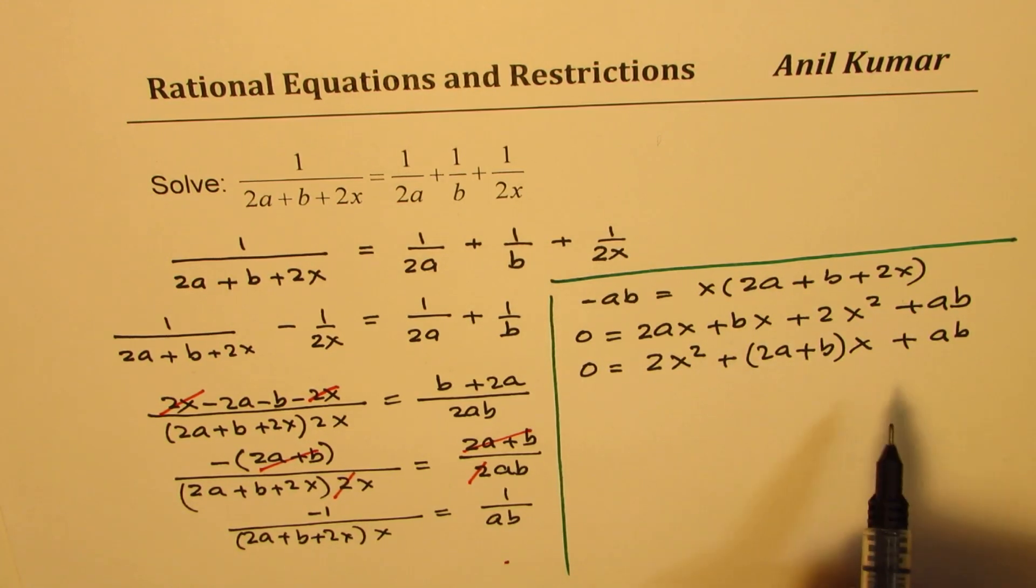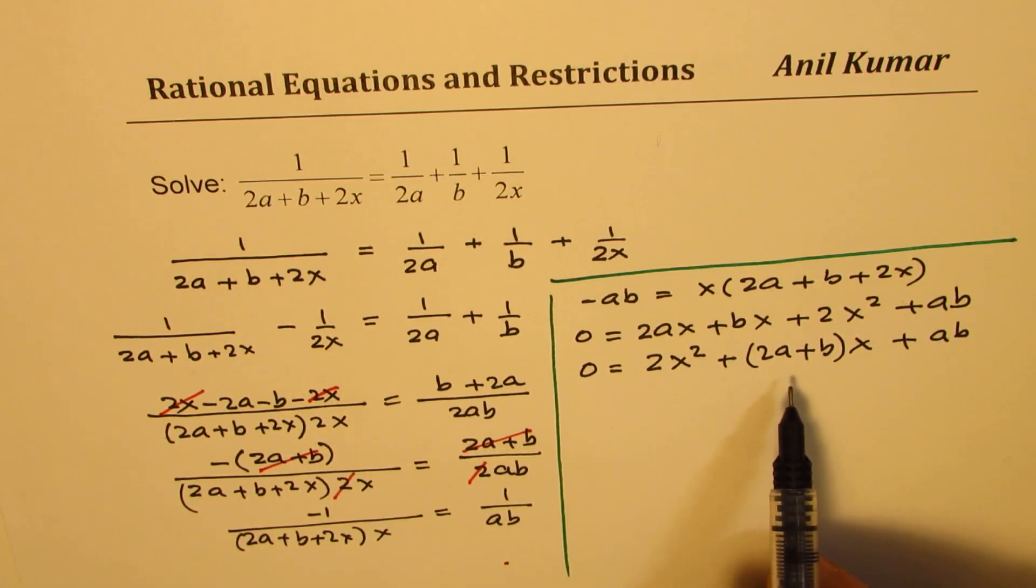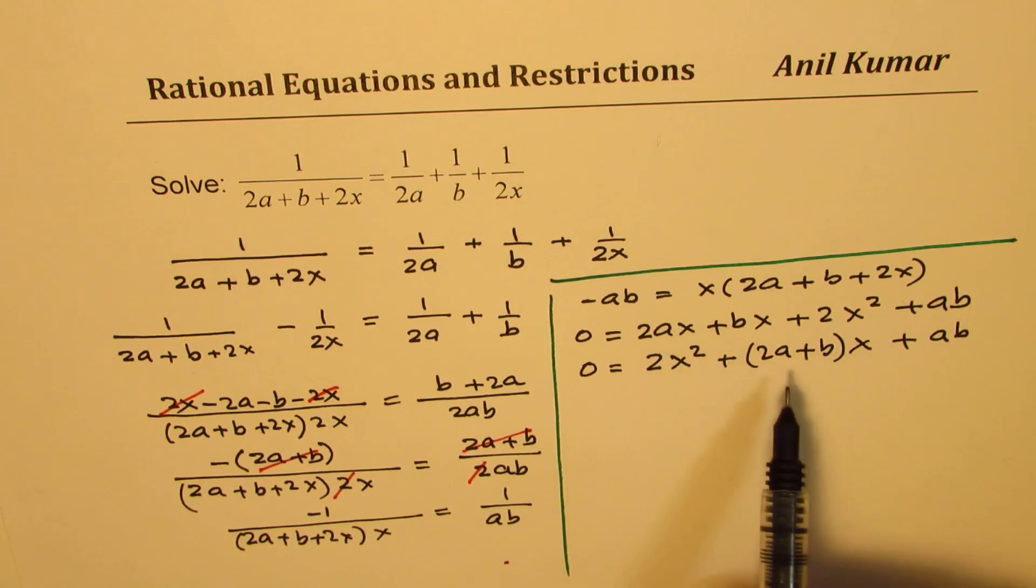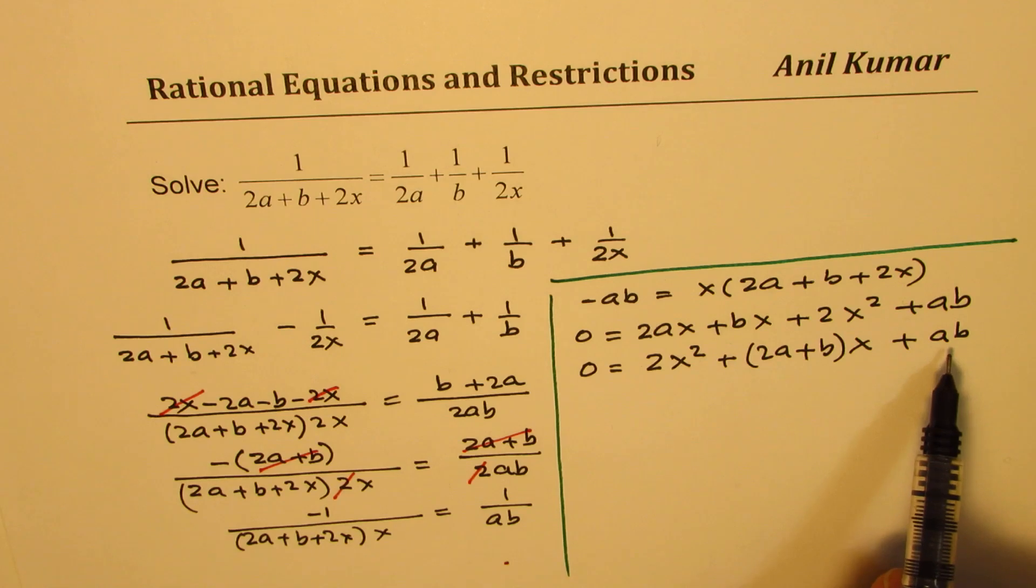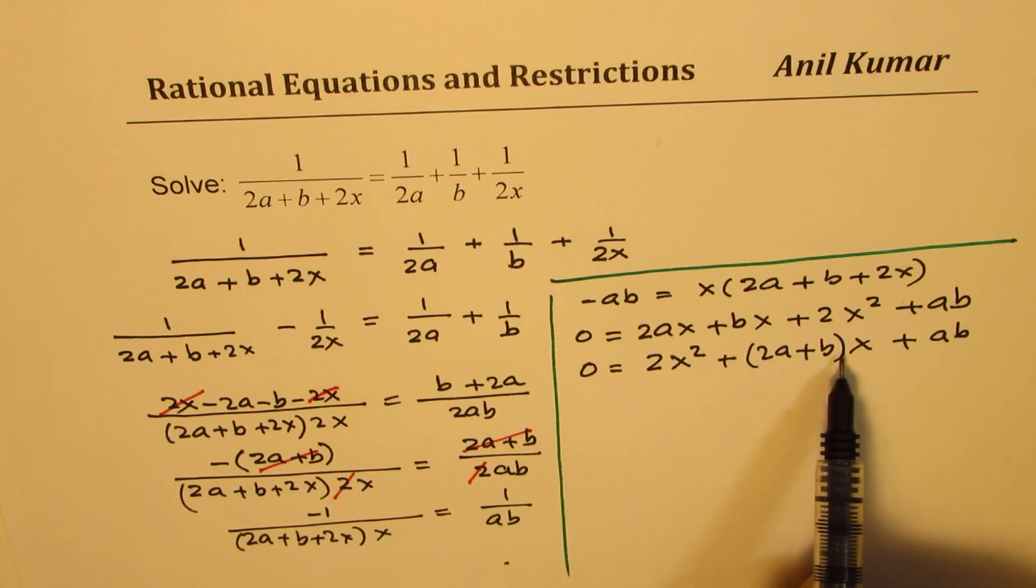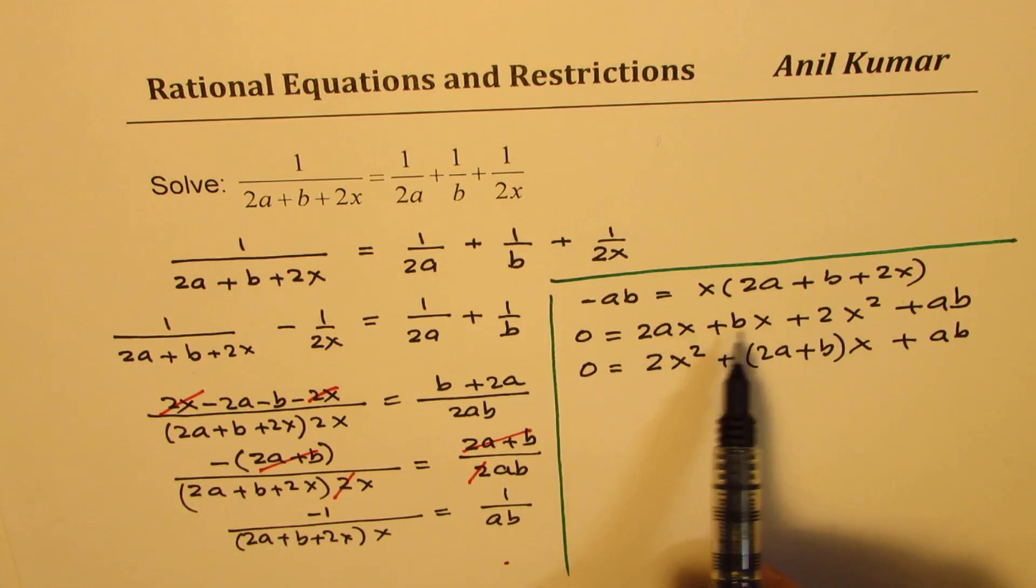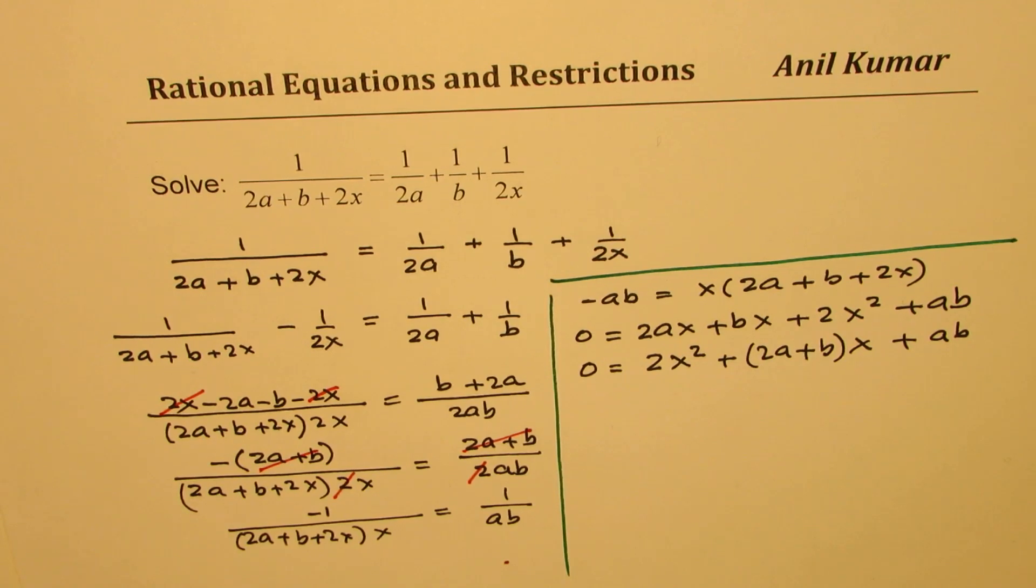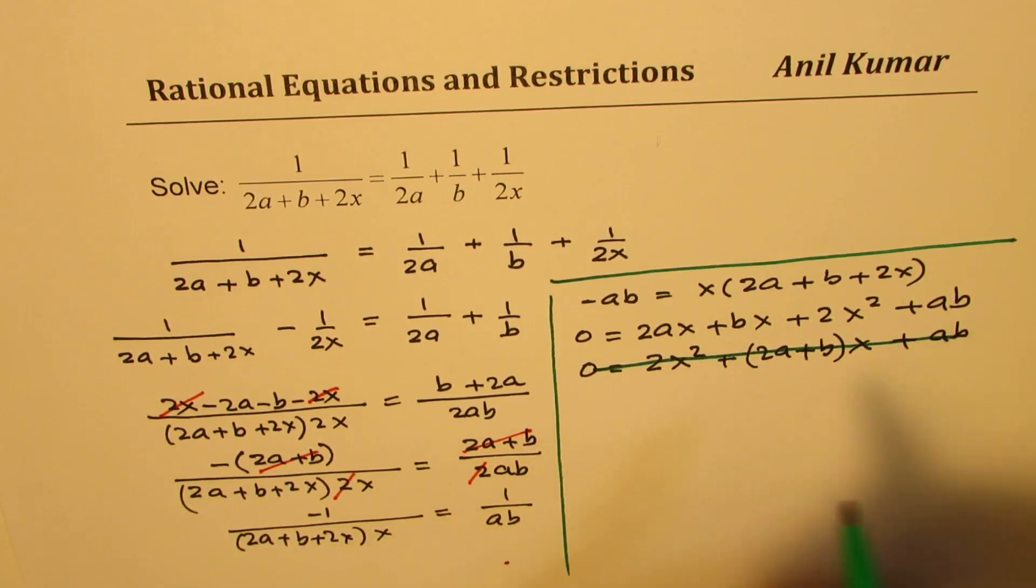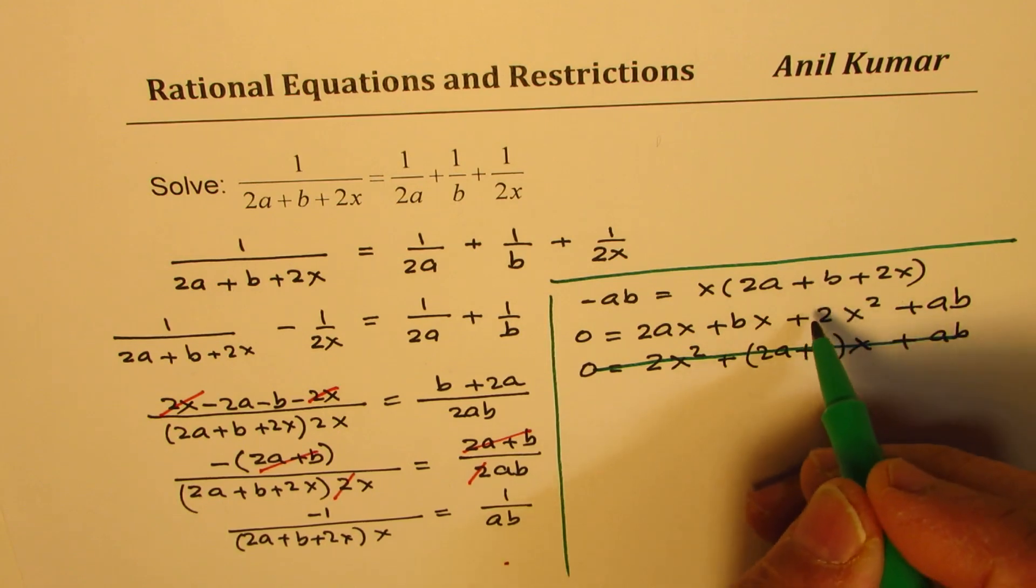Now, how to solve this? You could actually factor this also. So I could have factored here itself, taking some things in common. So as you can see here, we are looking for product of 2ab and sum of 2a plus b. So if I take 2a and 2x common, I could have done it. So let me get back to the previous equation. So I will take, actually rearrange them.